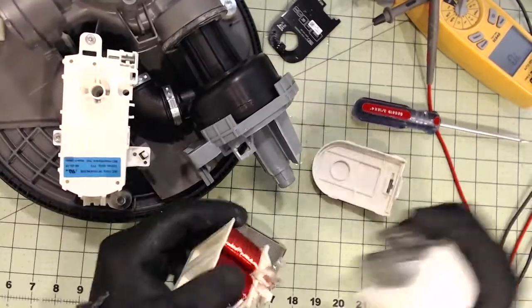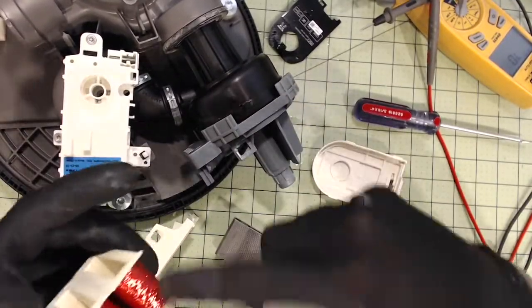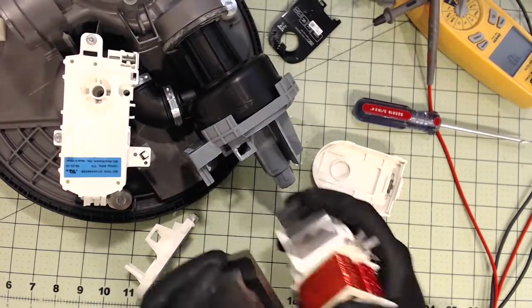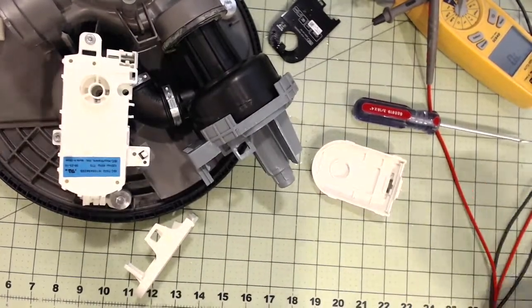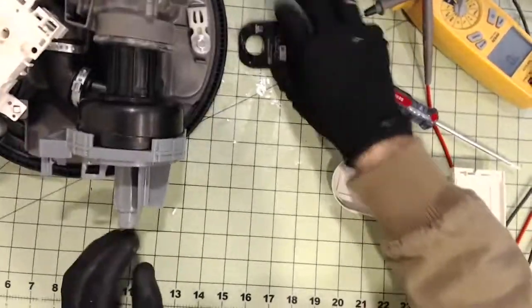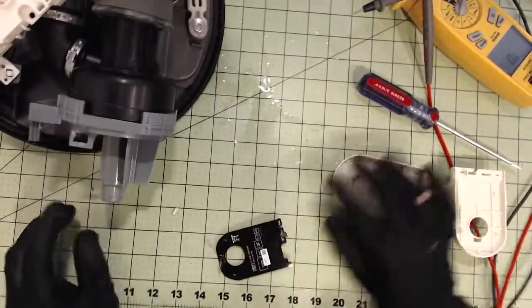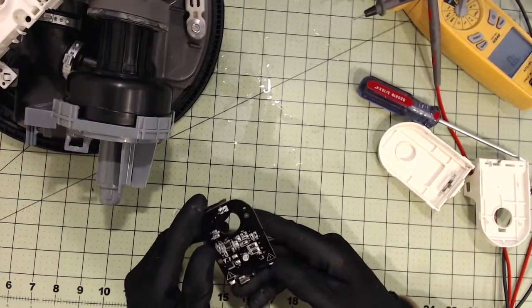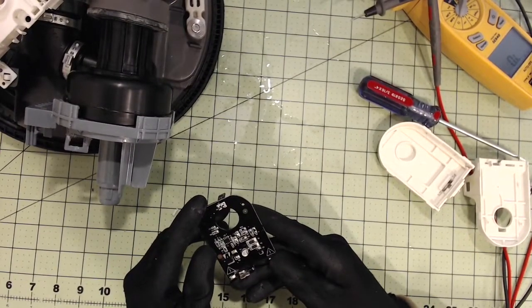So inside here, you have this same coil. So basically it's the same as a drain pump for a washer. So I'm going to go ahead and test out this board and see if I can't find what on this board has failed.